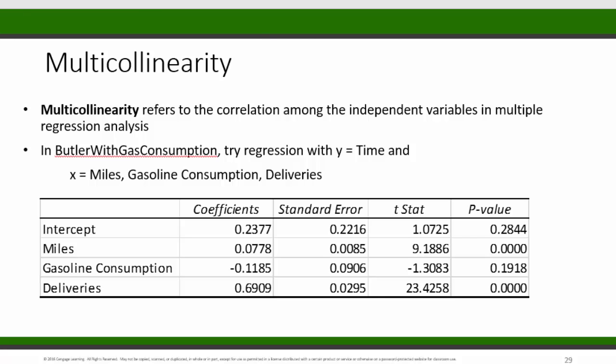Now is a good time to mention a problem that could occur when we include independent variables that are closely related to each other in a regression analysis. Let's take a look at a set of data with an additional x variable, gas consumption.